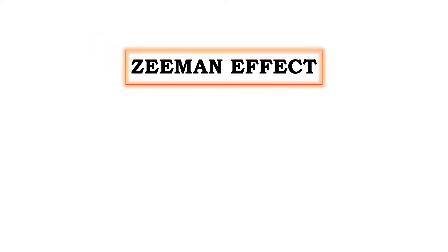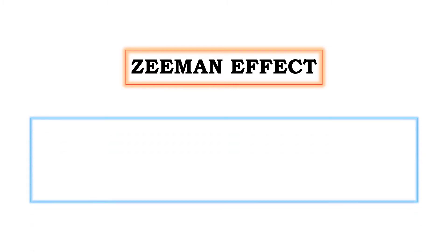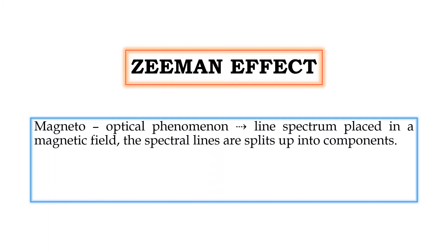First, let us see the statement for Zeeman effect. What is meant by Zeeman effect? It is a magneto-optical phenomenon, which means if a source of light producing line spectrum is placed in a magnetic field, the spectral lines are observed to split up into components.